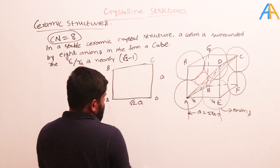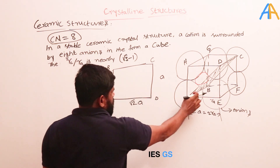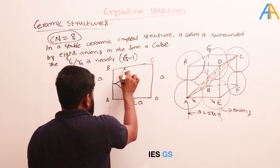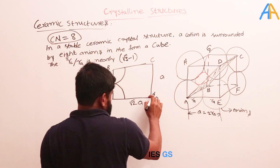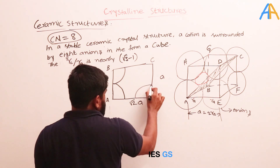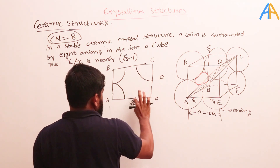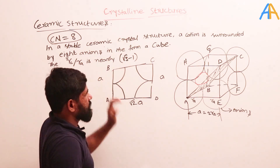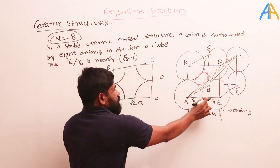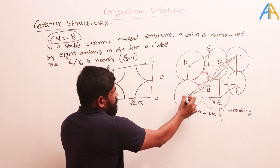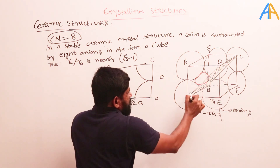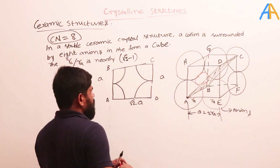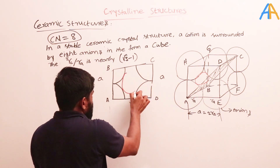Drawing the atoms on this plane: one atom is at A, another at B, touching outward. The atom at D is also touching. However, the atom at corner D and the atom at the opposite corner are not touching each other directly — because the cation in between is touching all the atoms. The cation sits between them along the body diagonal.